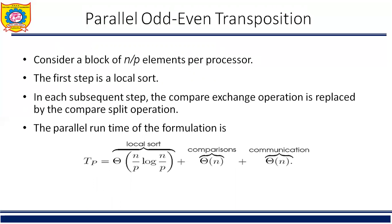To obtain a cost-optimal formulation, we use fewer processes. Let P be the number of processes where P is less than N. Initially, each process is assigned a block of N/P elements, which it sorts internally using merge sort or quick sort in O((N/P) log(N/P)) time. After this, the processes execute P phases — P/2 odd and P/2 even — performing compare-split operations. At the end of these phases, the list is sorted. During each phase, O(N/P) comparisons are performed to merge two blocks, and O(N/P) time is spent communicating. Thus the parallel runtime of this formulation is given by the formula.